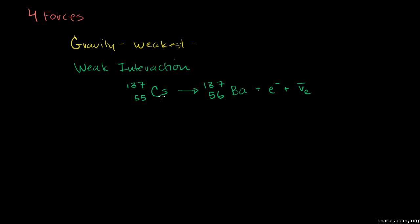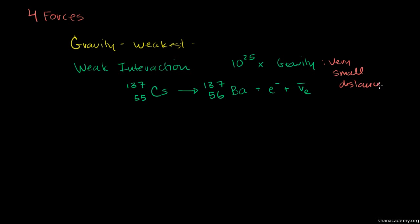Now, just to give a sense of how weak gravity is even relative to the weak interaction: the weak interaction is 10 to the 25th times the strength of gravity. You might be thinking, if this is so strong, how come it doesn't operate on planets or us relative to the Earth, or why doesn't it apply to intergalactic distances the way gravity does? The reason is the weak interaction really applies to very, very small distances — only on the subatomic scale. Beyond that, it kind of disappears as an actual interaction.